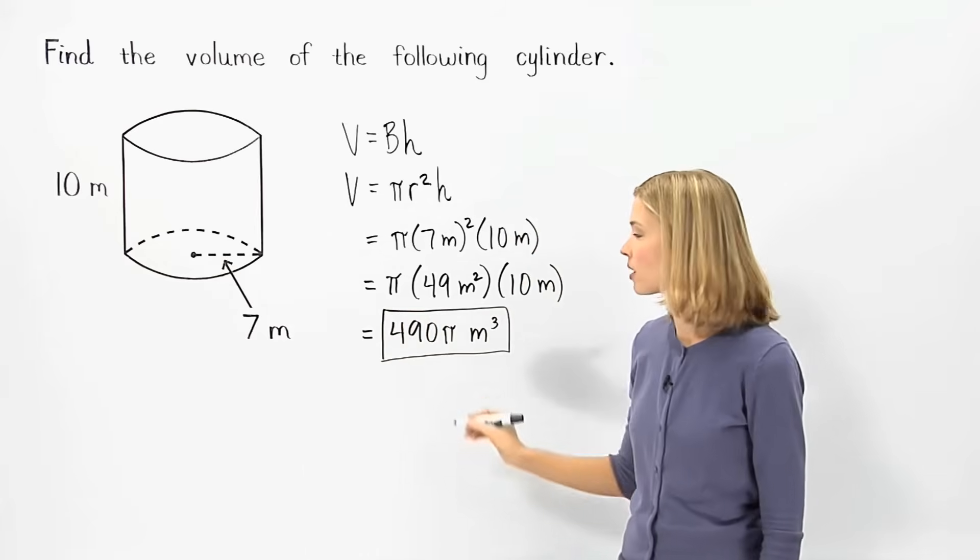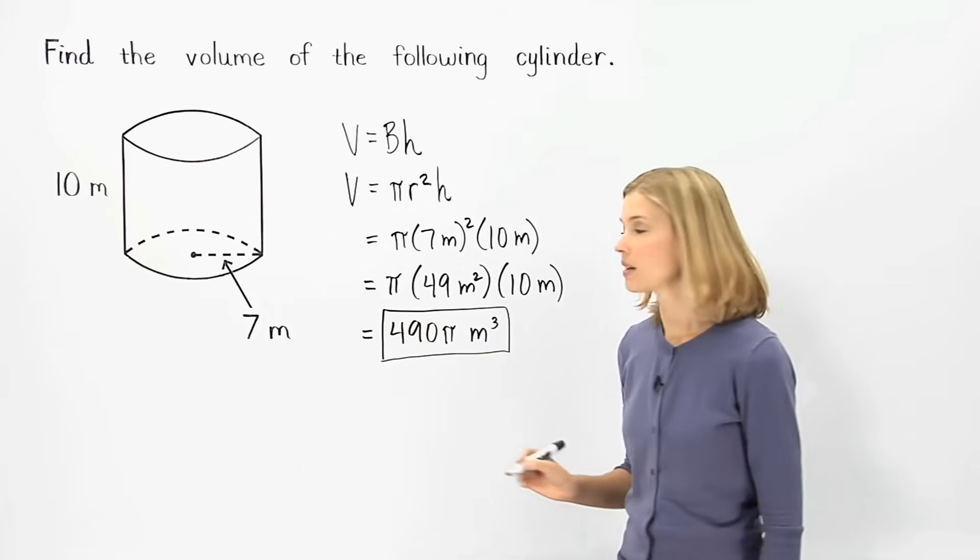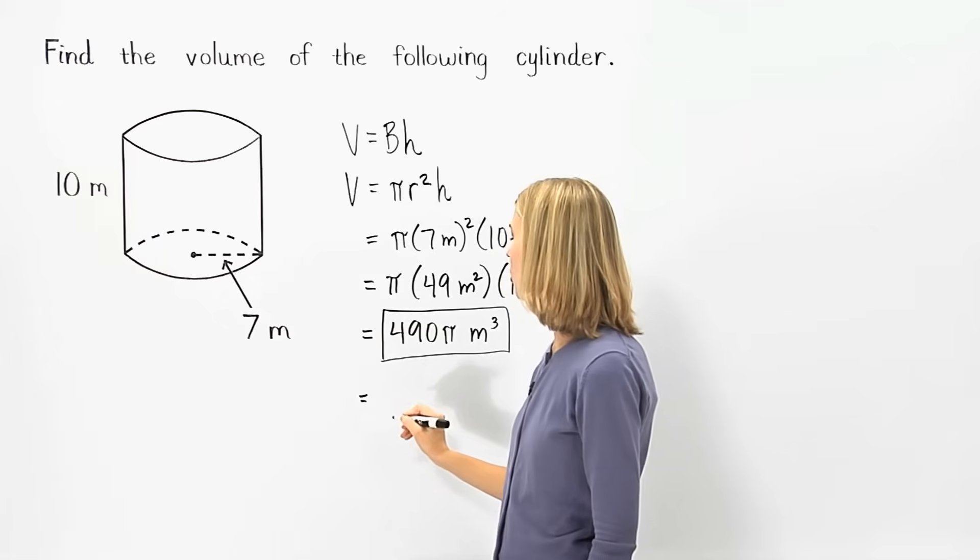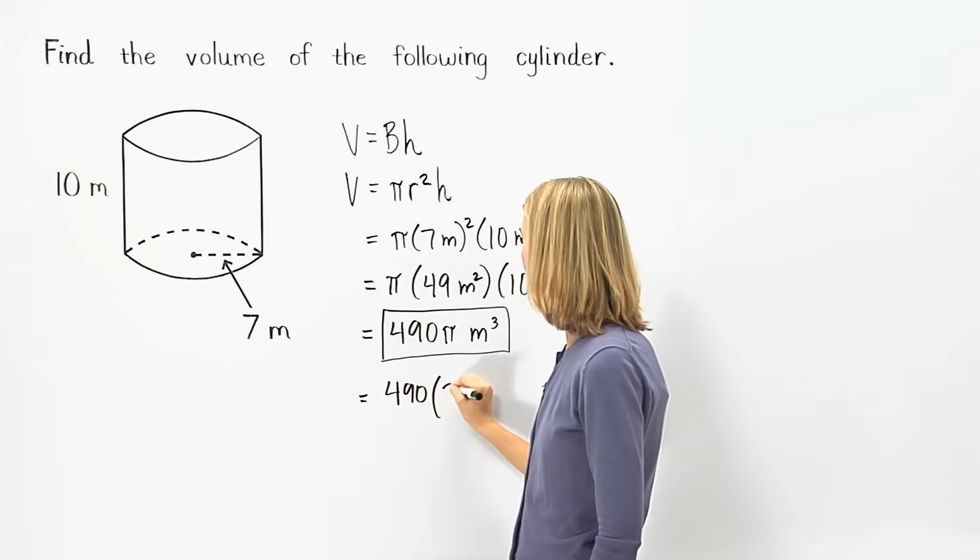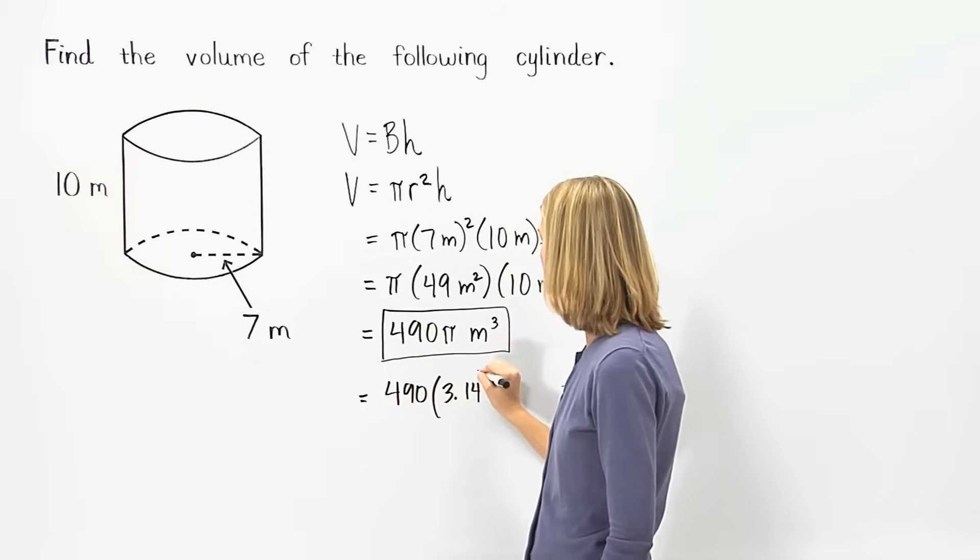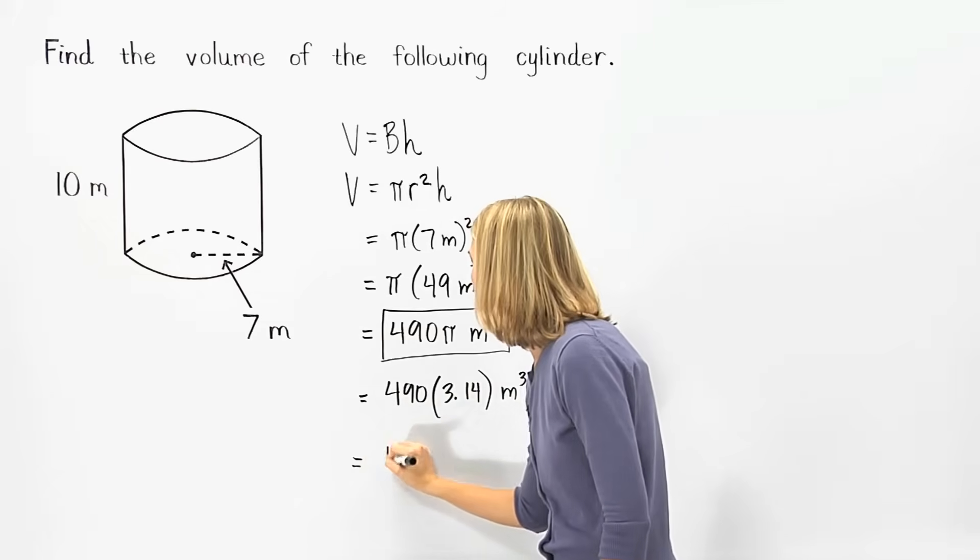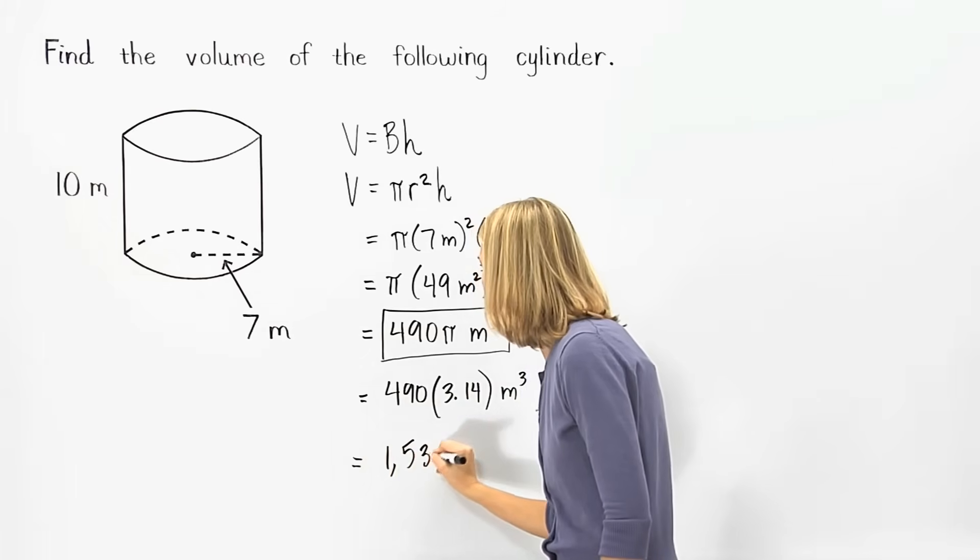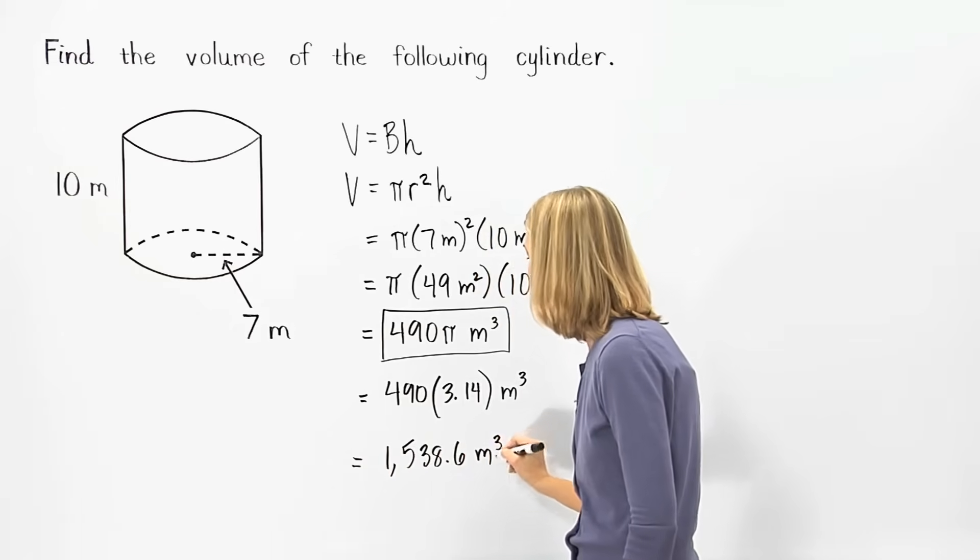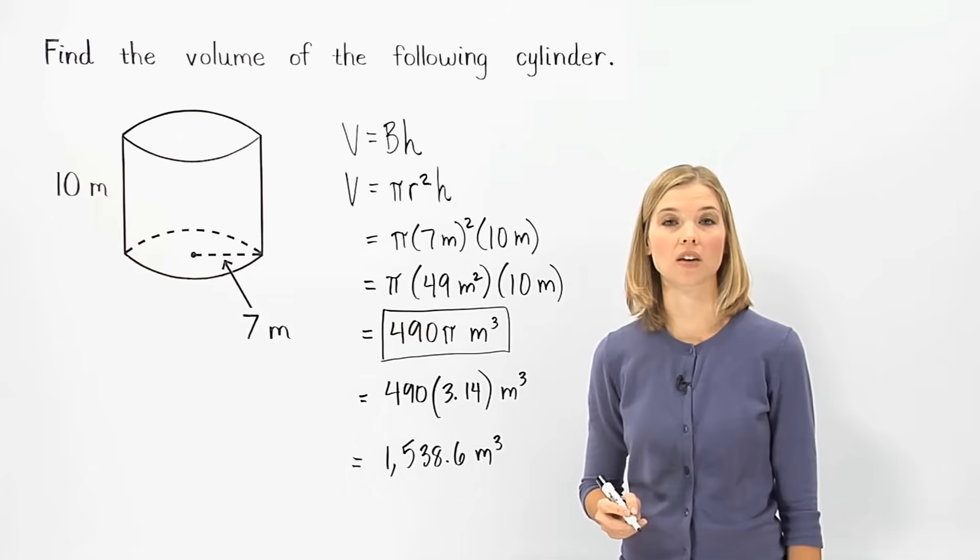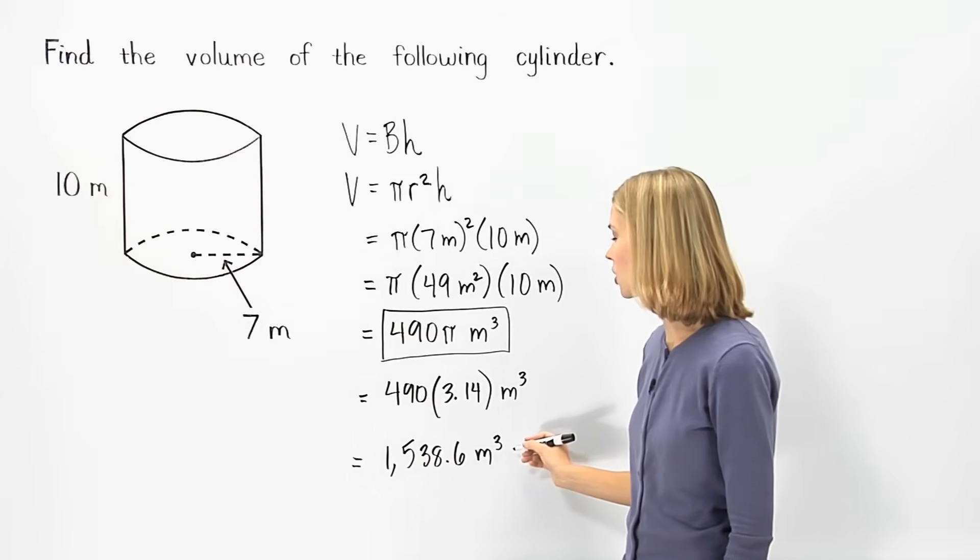Next, remember that pi is approximately equal to 3.14. So, we can plug 3.14 in for pi, and we have 490 times 3.14 meters cubed, which equals 1538.6 meters cubed. So, another way to write the volume of the given cylinder is 1538.6 cubic meters.